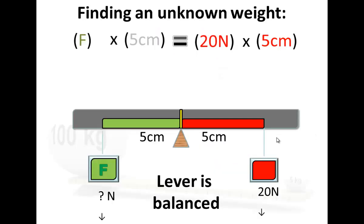You can use a lever to find out the weight of something. Let's say I have a weight in the lever, I don't know what it is, but I know it's five centimeters away from the pivot, and on the right, I've got five centimeters and I've got a known weight, in this case, 20 Newtons.